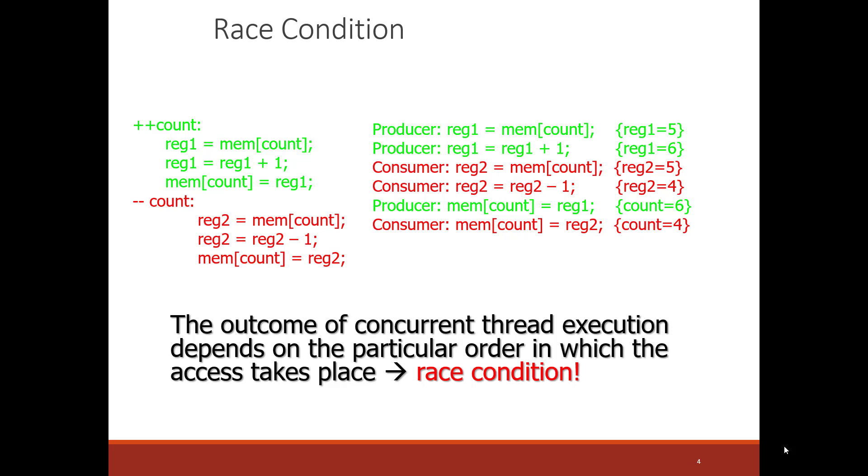The code on the left shows the count being incremented and decremented, two separate threads, in a clean way. The one thread comes in, we're going to increment the count because we're adding something to the buffer. The value of the count is moved into the register, the register is incremented, and then the register is written back to the memory itself. All that seems fine. Now, the value of the count in the memory is one greater.